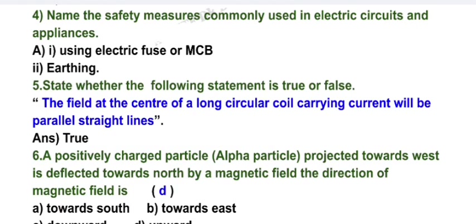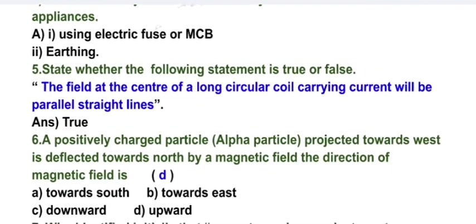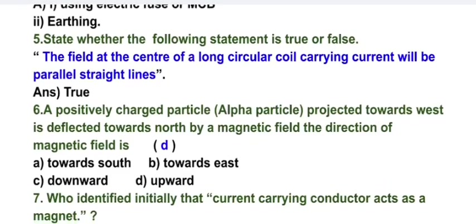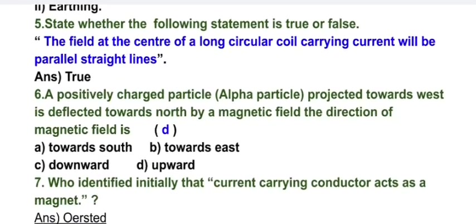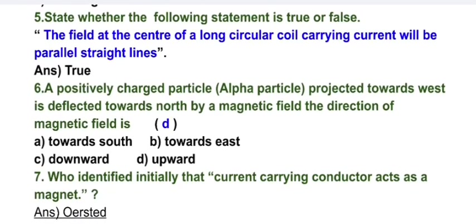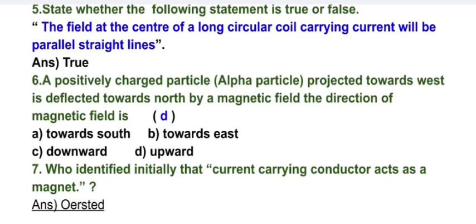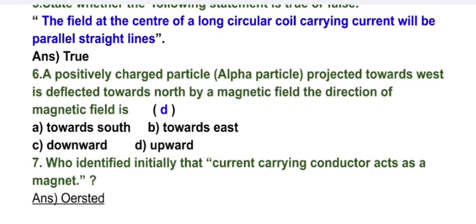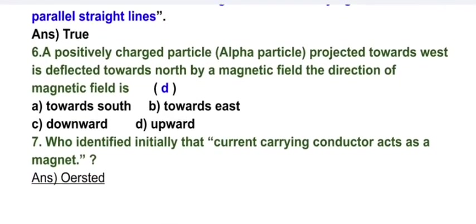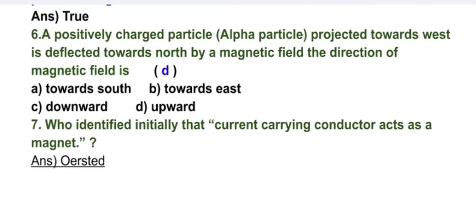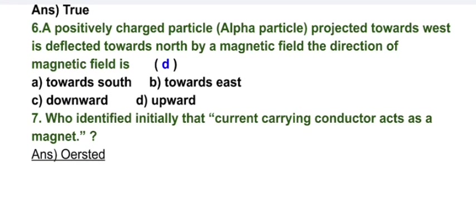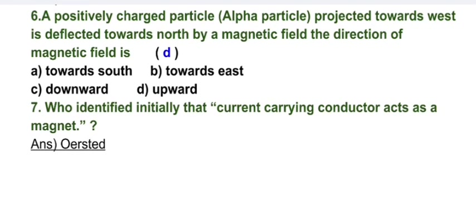A positively charged particle, that is alpha particle, projected towards west is deflected towards north by a magnetic field. The direction of magnetic field is upward. Who identified initially that current carrying conductor acts as a magnet? Oersted.